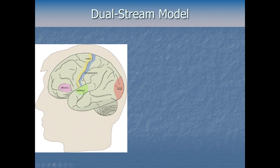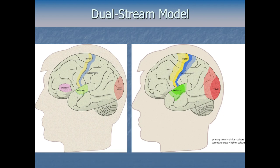The somatosensory cortex is just a little strip at the front of the parietal lobe. From there, each of our senses has some secondary processing areas nearby. The darker region of color is the primary area for each sense, and the lighter color around it is areas still dedicated to making sense of that input before sending it on to other parts of the brain — a secondary area for that sense.